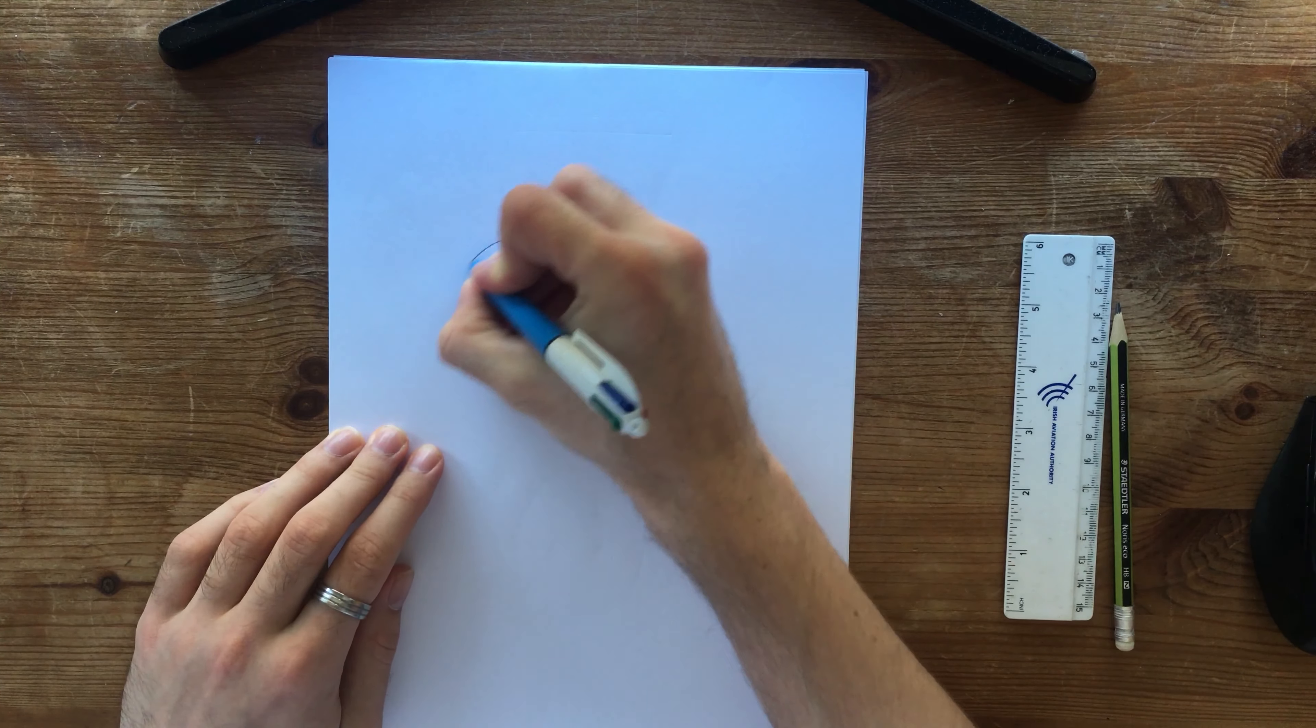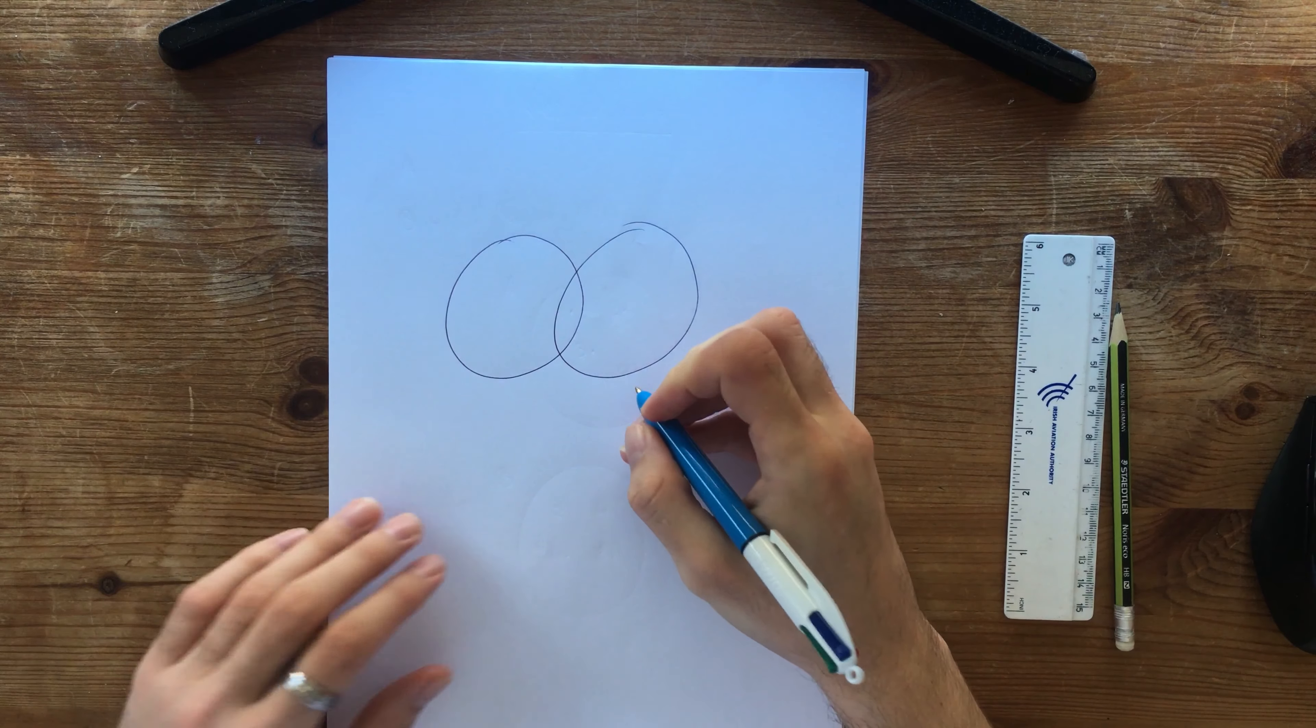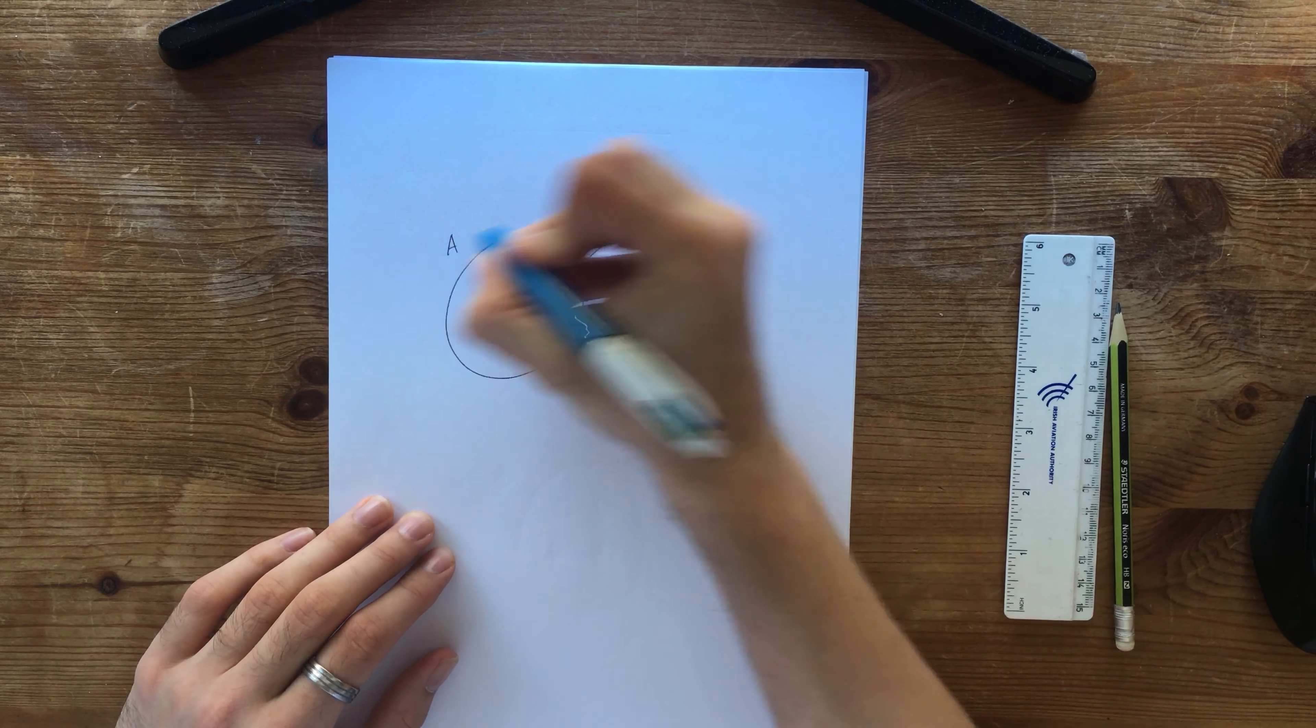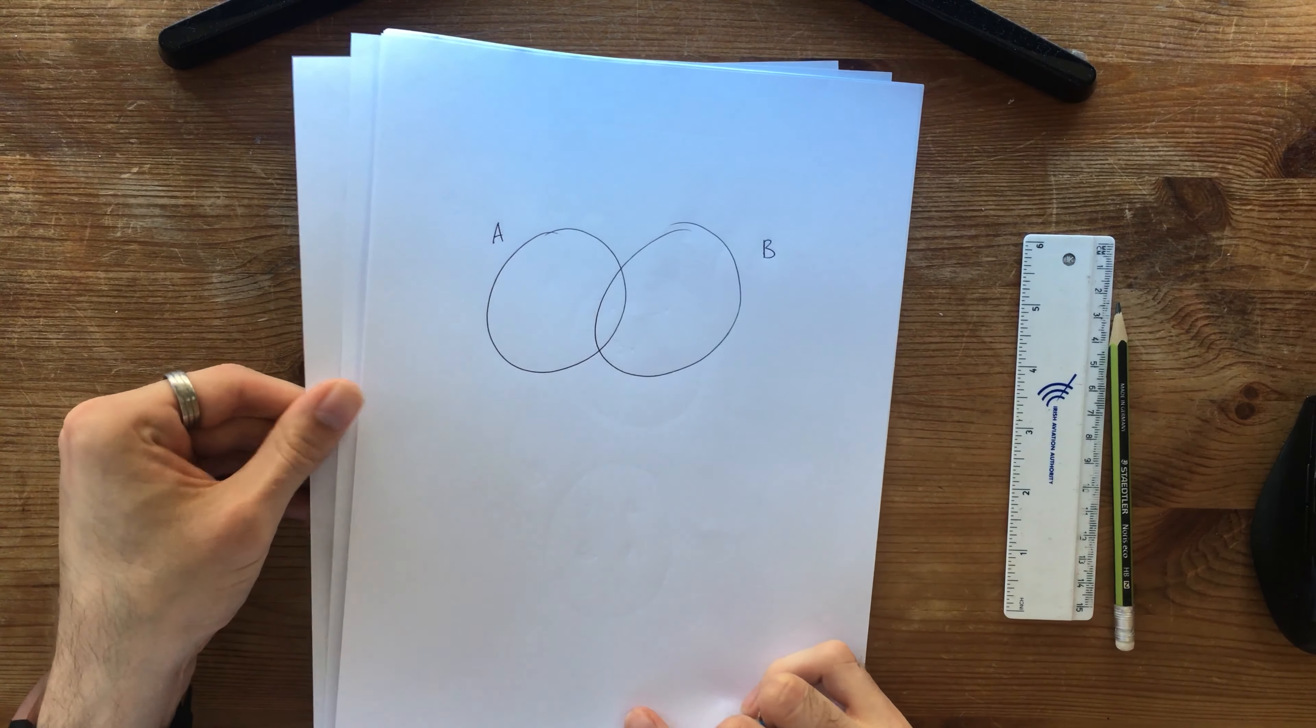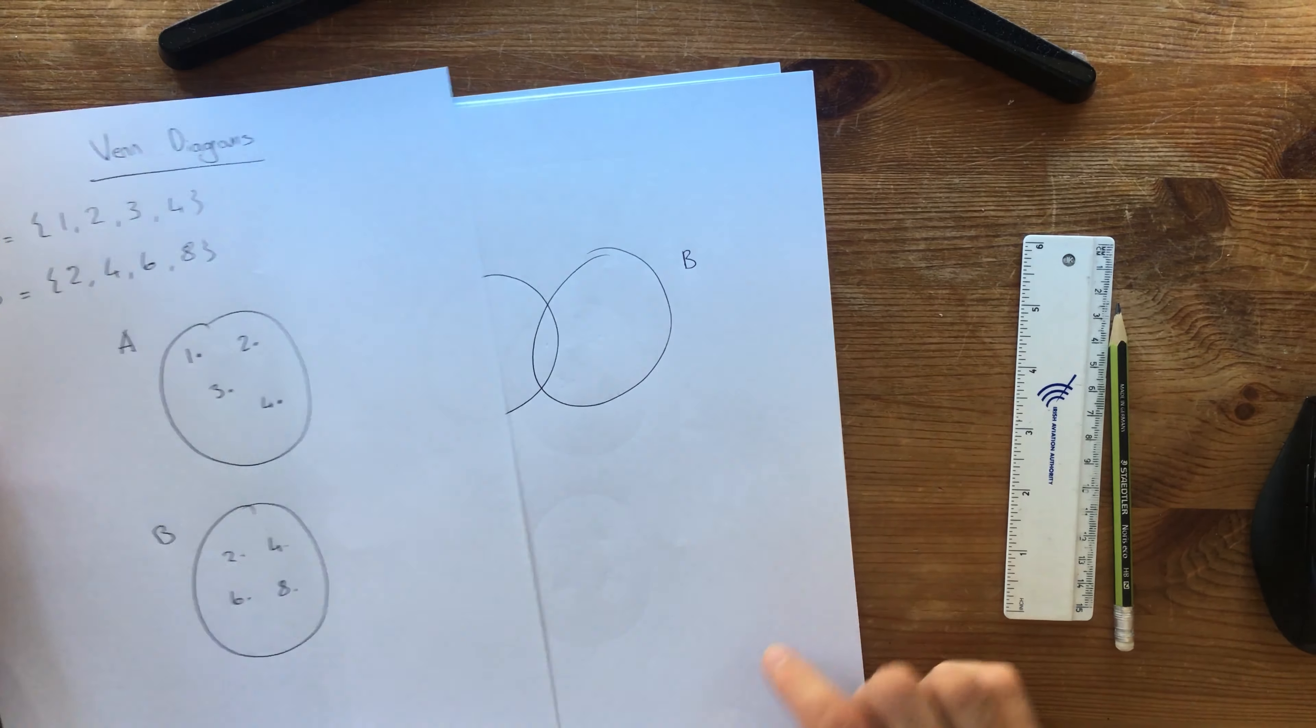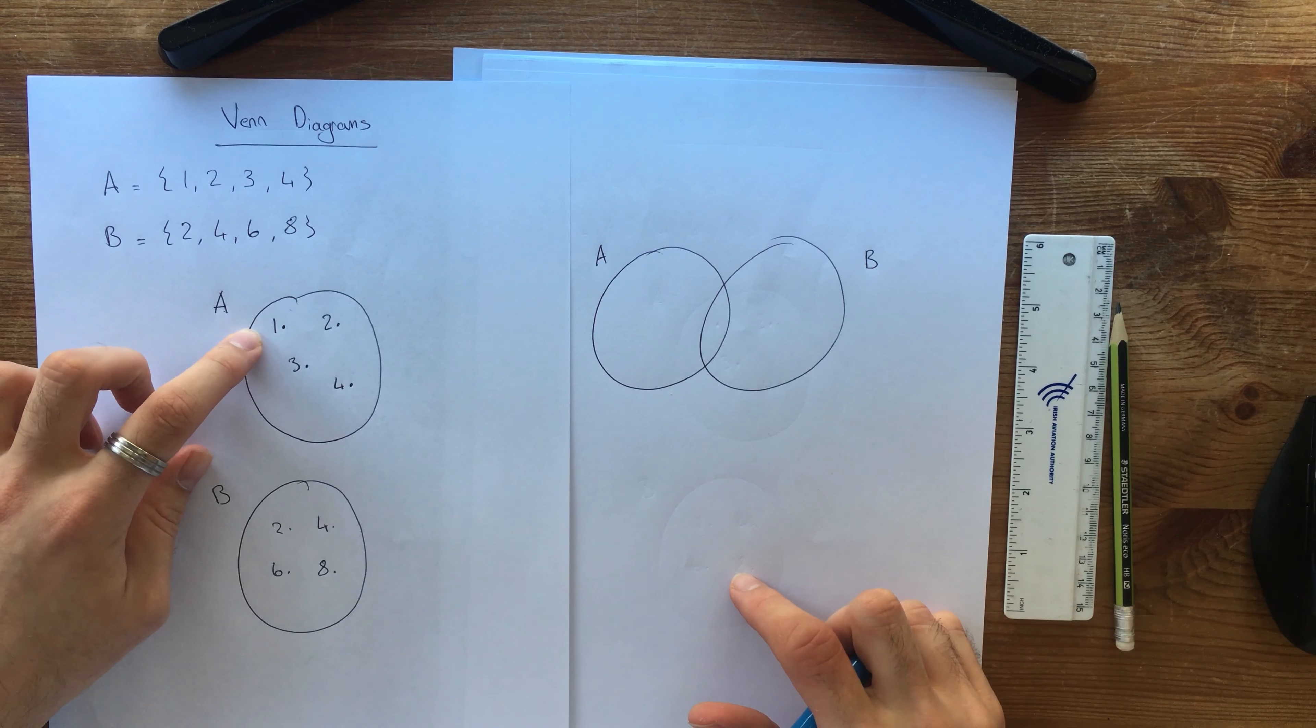So I'm going to draw one circle like this and another one overlapping. And what this one's going to be is going to be A and this one's going to be B. And let's take a look at what we had just done. So if I take what was in A here which is 1, 2, 3, 4.